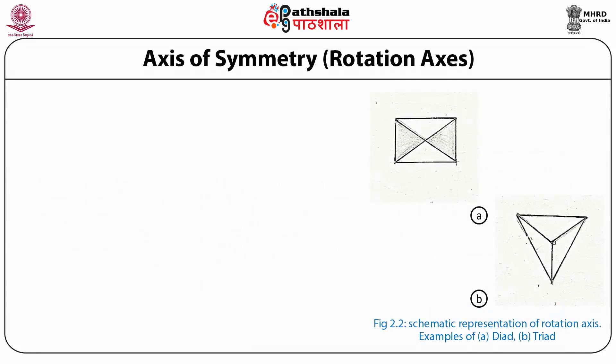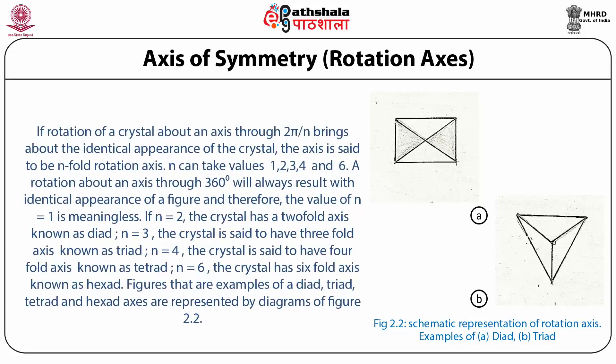Axis of symmetry, also known as rotation axis. If rotation of a crystal about an axis through 2π/n brings about the identical appearance of the crystal, the axis is said to be an n-fold rotation axis. n can take values 1, 2, 3, 4 and 6. A rotation about an axis through 360 degrees will always result in identical appearance of a figure, and therefore the value n equals 1 is meaningless.